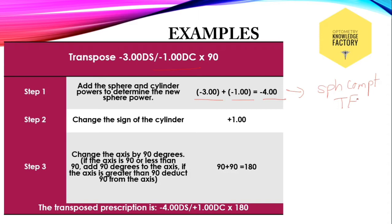Step 2: change the sign of the cylinder. The cylinder is concave. We have to convert it into convex by changing the sign from minus to plus. Plus 1 — this is the cylindrical component of the transposed form.